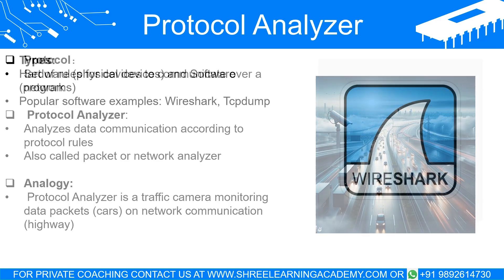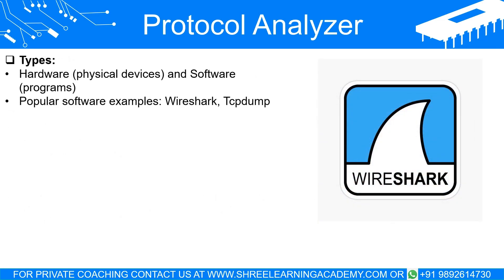Protocol analyzers come in two types: hardware and software. Hardware analyzers are physical devices installed on the network, whereas software analyzers are programs installed on a computer.